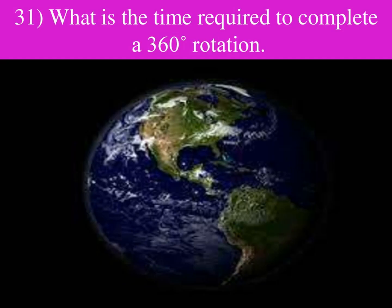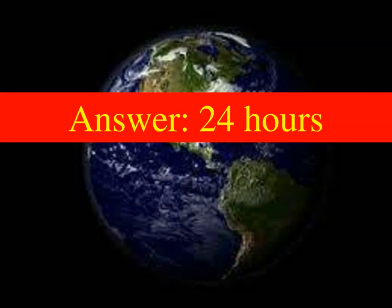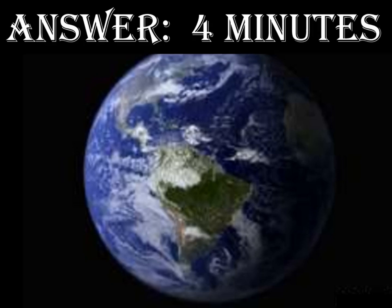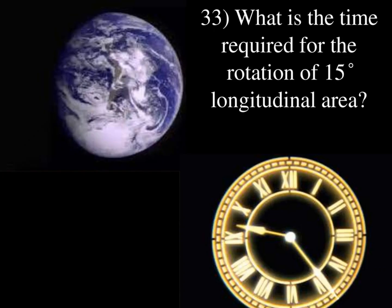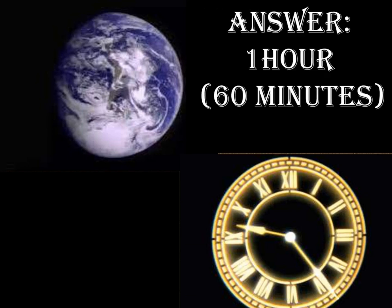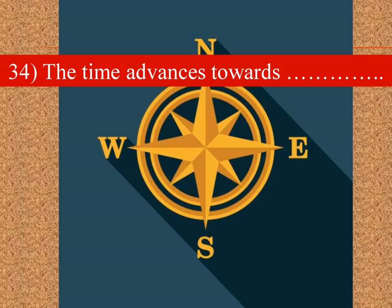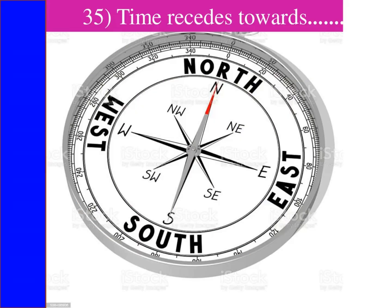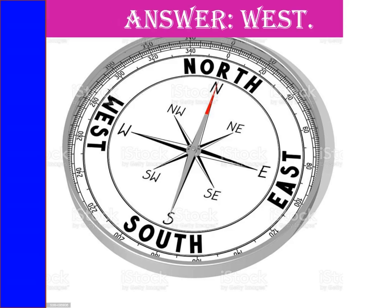What is the time required to complete a 360-degree rotation? Answer: 24 hours. What is the time required for the Earth to complete the rotation of 1 degree longitude? Answer: 4 minutes. What is the time required for the rotation of a 15-degree longitudinal area? Answer: 1 hour. The time advances towards the east and recedes towards the west.